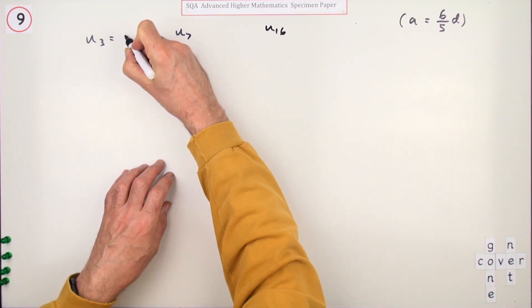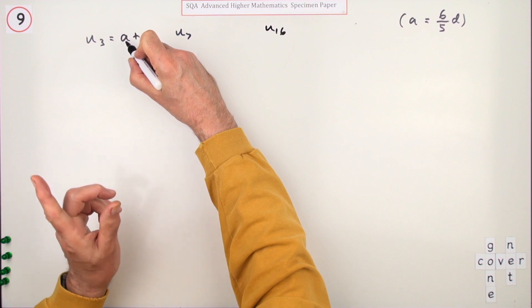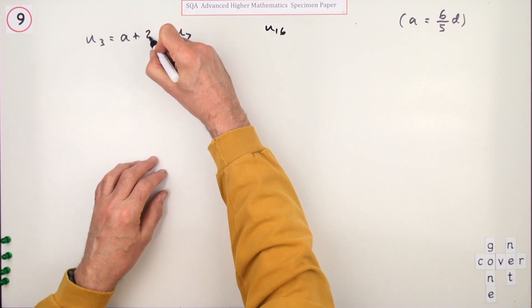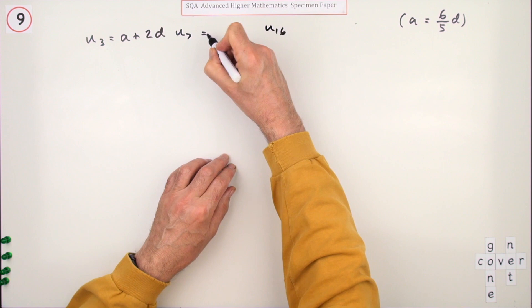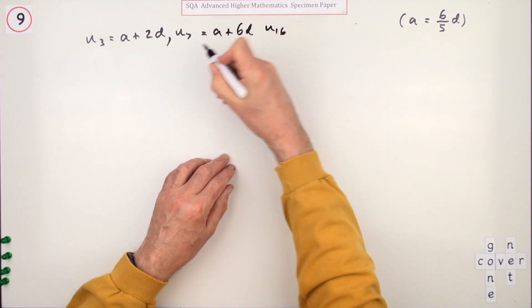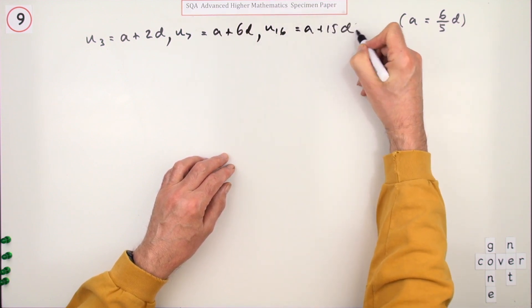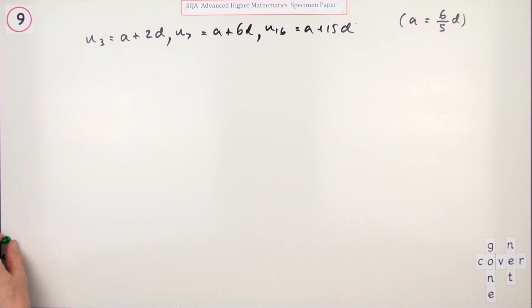Well if that's the third term, you'll have started with the first term which would be a, plus two lots of d. That would be a plus six lots of the difference, and that would be a plus fifteen lots of the common difference. Doing that gets a mark.